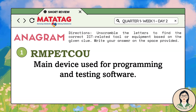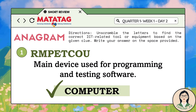Short review. Directions: unscramble the letters to find the correct ICT-related tool or equipment based on the given clue. Write your answer on the space provided. Number 1: RMPTRCOU — main device used for programming and testing software. The answer is computer. Very good.